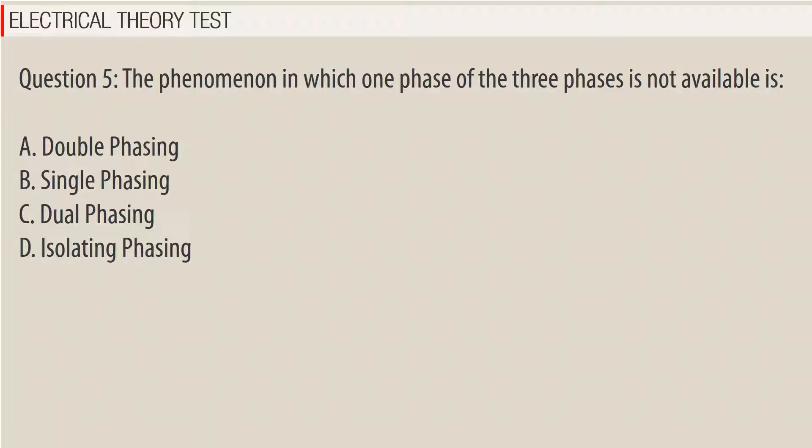Question 5: The phenomenon in which one phase of the three phases is not available is — A. double-phasing, B. single-phasing, C. dual-phasing, D. isolating-phasing.